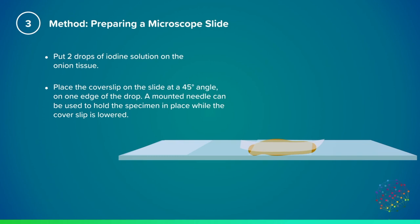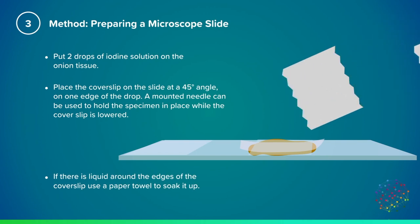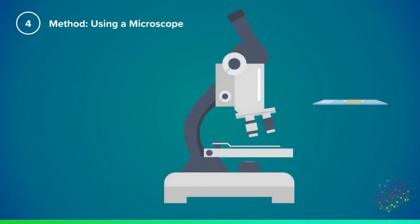And now, if you have any air bubbles or excess liquid around the microscope slide, you can then use a paper towel on the edges of the cover slip to soak up this excess liquid. So you've now prepared your microscope slide and it's ready for viewing.